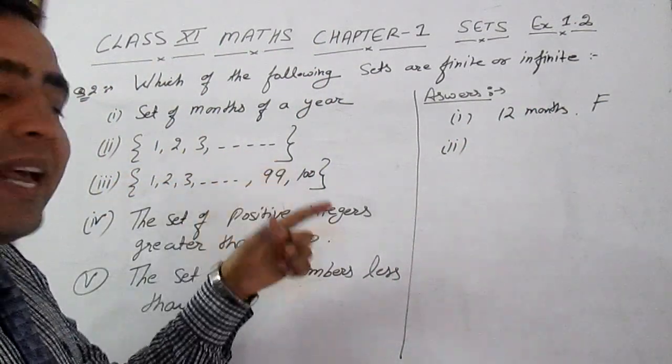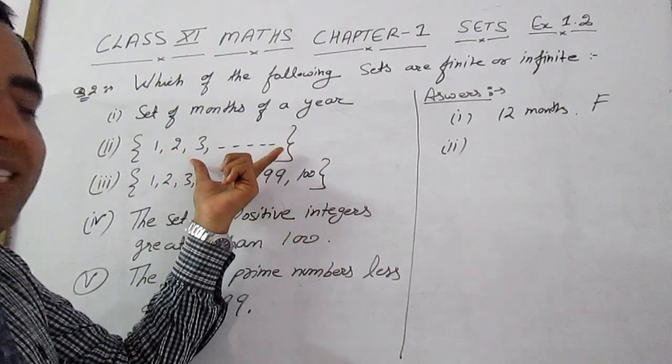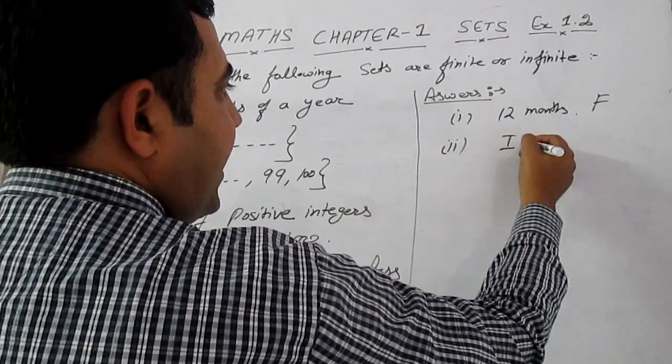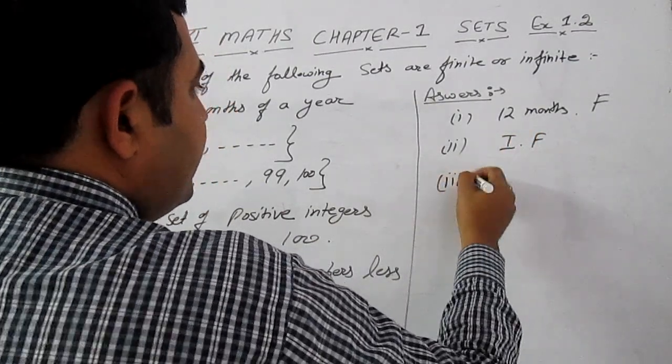{2, 3, ...} There are an infinite number of elements in this set; therefore, this is an infinite set. Part three is {1, 2, 3, ..., 99, 100}.